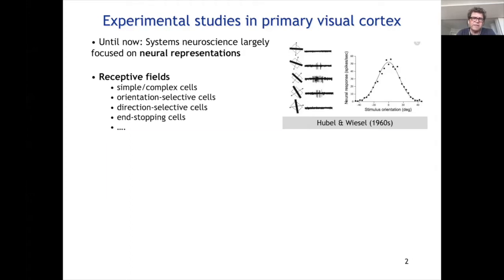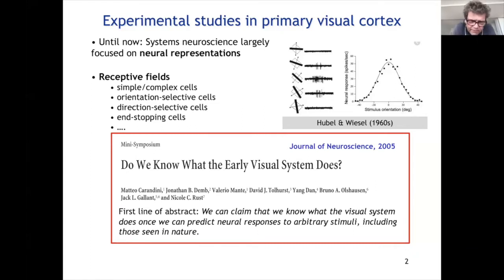This status was summarized in a multi-author perspective paper from 2005 asking: 'Do we know what the early visual system does?' These well-known visual neuroscientists said in the first line of the abstract: 'We can claim that we know what the visual system does once we can predict neural responses to arbitrary stimuli, including those seen in nature.' We are certainly not in that situation now. Receptive fields extracted from simple stimuli like drifting gratings yield mathematical models that are not able to predict responses to natural images.